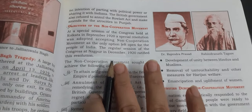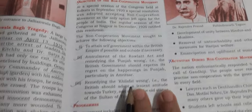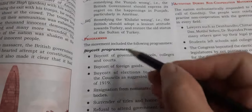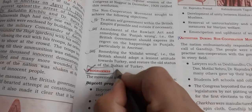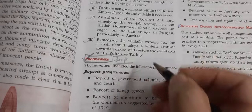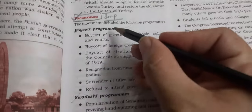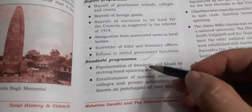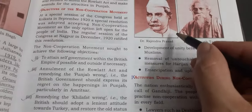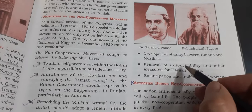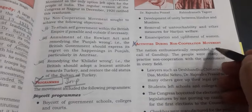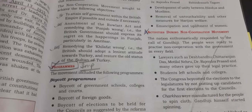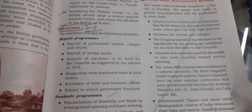Moving on, do the objectives of the Non-Cooperation Movement — not the most important, but do it as part of the chapter. More important are the programs of the Non-Cooperation Movement — mark these as IMP. Know the different boycott programs and Swadeshi programs launched as part of the movement. The activities of the Non-Cooperation Movement are not in the syllabus, so cancel them.